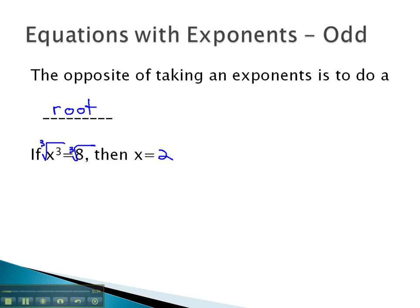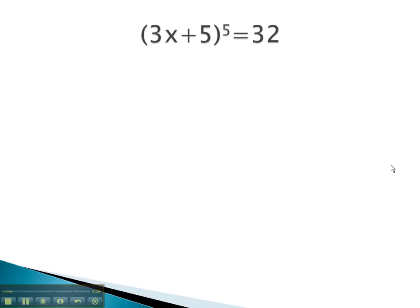Let's try some examples that are a little more involved, which we can solve by taking odd roots. In this problem, we have a fifth power. We solve a fifth power by doing the opposite, or a fifth root, on both sides.